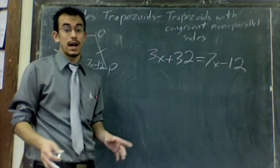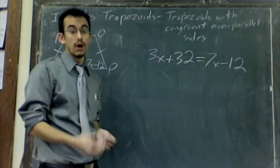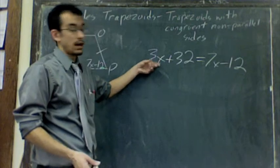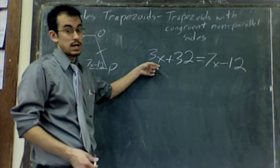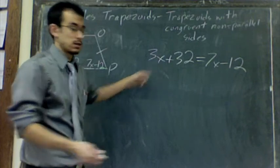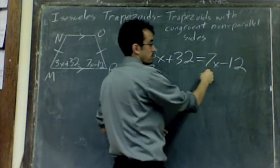So we move right ahead to getting X alone on one side. If X is on both sides, you have to move one of them with addition or subtraction. I always move the smaller one. I'm going to move my 3X instead of my 7X. Since this is positive 3X, to get rid of it you have to do the opposite, subtract it. Subtract 3X here, then we'll cancel that out. Subtract it on the right one.